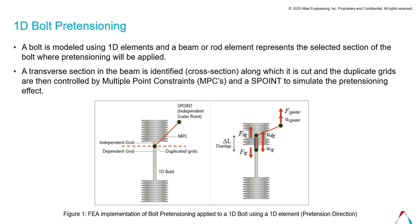Additionally, a scalar point (S-point) is automatically created to act as an independent grid point. A pair of self-balanced pretension forces is applied on both ends at the cut, within the newly created S-point. The force acts on both sides of the grid point — one on the dependent grid and one on the independent grid. The specific pretension force is internally applied to the S-point and transfers to the duplicate grid points via MPCs, which control the movement of the newly created duplicate grid point and scalar point.